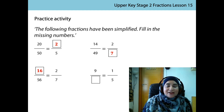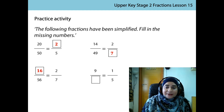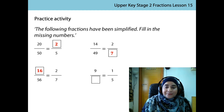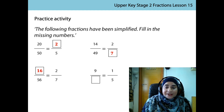Now let's look at the last example. I have 1. I have to multiply 1 by 9 to get to 9, so I also have to multiply 5 by 9. So 5 times 9 is 45.